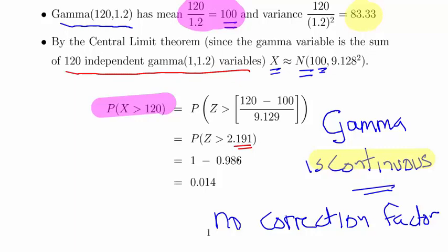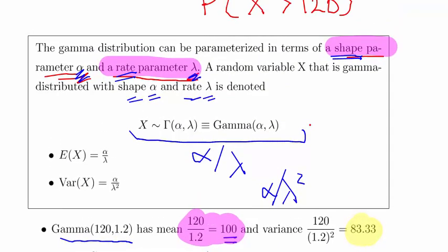Then we get our probability there of 0.014, so 1.4%. That's it really. The key things there: knowing the mean, knowing the variance.